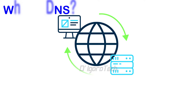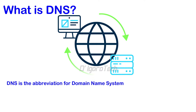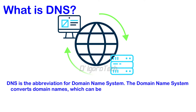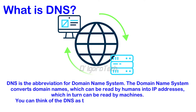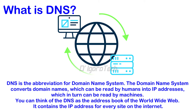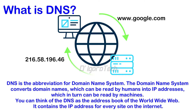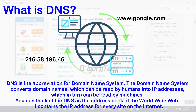But wait — what is a DNS and what does it do? DNS is the abbreviation for domain name system. The domain name system converts domain names, which can be read by humans, into IP addresses, which can be read by machines. You can think of the DNS as the address book of the World Wide Web — it contains the IP address for every site on the internet. For example, if you open a browser and enter google.com, the DNS will convert it to an IP address such as 216.58.196.46. That is how DNS works.